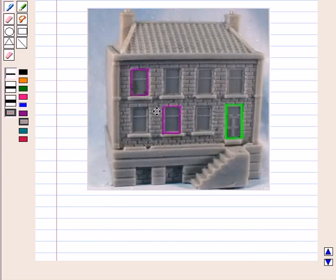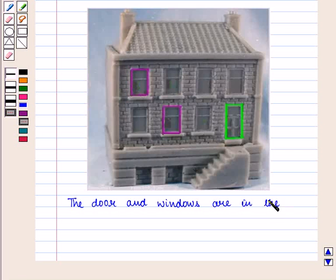And here we can see that the door and windows are in the shape of a rectangle.